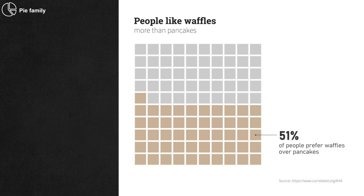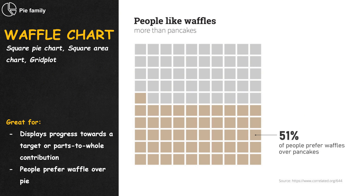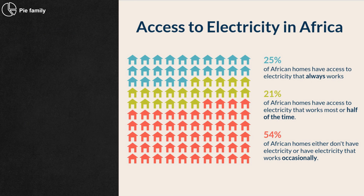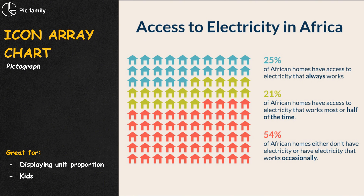Coming back to the percentage family: if you are not really a pie person, there's the waffle chart for you. It consists of a grid of 100 squares, with each representing 1%. If you are not a food person at all, those squares can turn into anything — a sticker, a photo, an icon, a house. It's called the icon array.